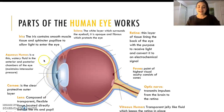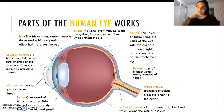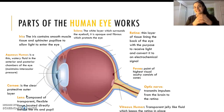We then have the cornea, which is a very clear tissue. It basically allows light to enter our eye because it's a clear tissue. Here we have our lens. It's composed of proteins and it's transparent and flexible, which means that it can expand and become really squashed depending on what is needed.